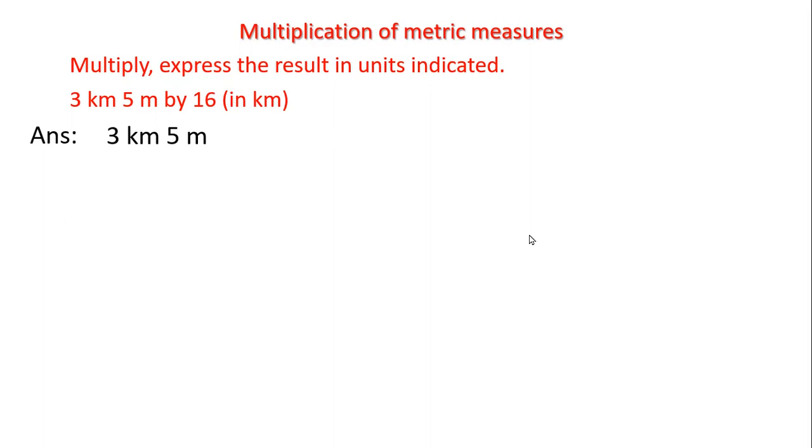We will convert these two units into a single unit of kilometer, then we will multiply with number 16. Since we know that 1 kilometer is equal to 1000 meters, we will write 3 as it is.